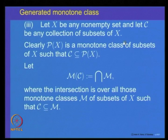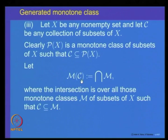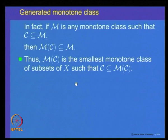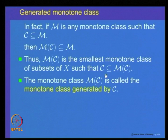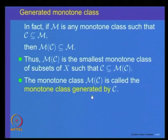M(C) is the smallest monotone class of subsets of X containing C, since it is the intersection of all monotone classes including C. This collection is called the monotone class generated by C. Given any collection C, we can generate an algebra, a monotone class, or a sigma algebra from it. The next question is: what is the relation between these generated collections?